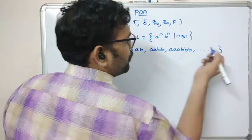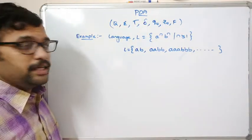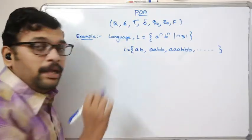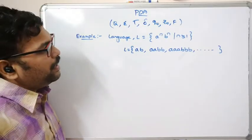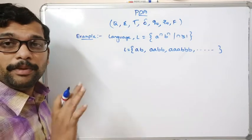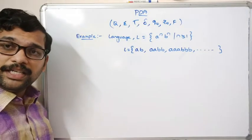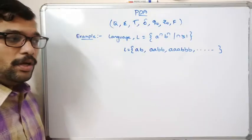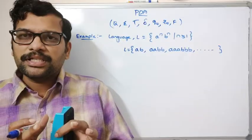From the language you can observe two things: first, 'a' must be followed by 'b', meaning we write 'b' only after 'a'; second, the number of a's and the number of b's must be equal. Also, recall that PDA is nothing but a finite state machine plus a stack, so we will use push and pop operations on the stack to balance the string.